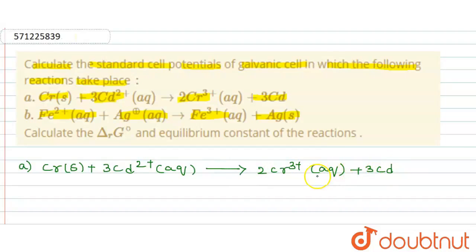We know that E° cell is equal to E° cathode minus E° anode is the formula to find the standard cell potentials of the galvanic cell of chromium and cadmium. So, E° cell equals E° cathode minus E° anode.